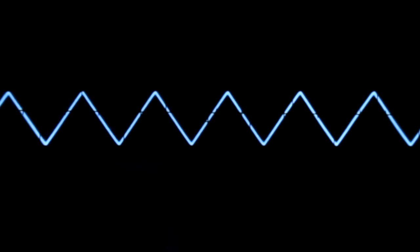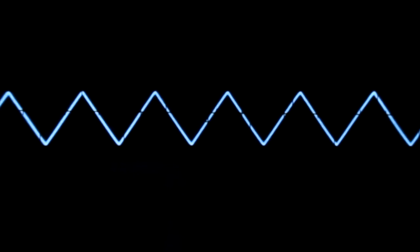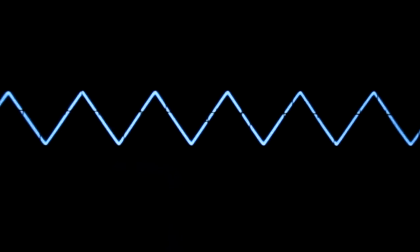Now let's look at a triangle wave. It has some edges and we can hear its sound being a little harsher than the sine, because it has harmonics or overtones.